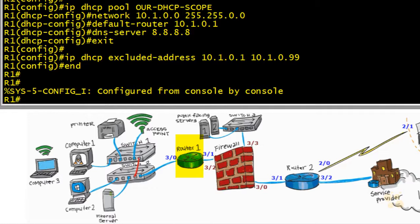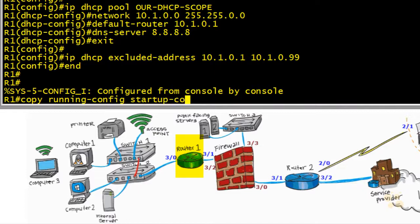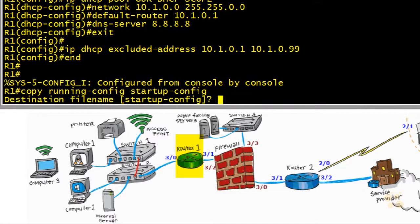Those commands we entered are live and active. However, if we want those same commands to survive a reboot, we need to save them to the startup configuration. The syntax for that is copy running-config startup-config. That way, the next time we reboot, those changes will still be there on this router.